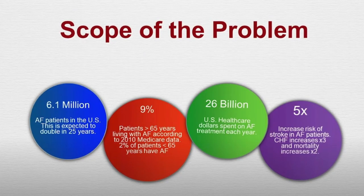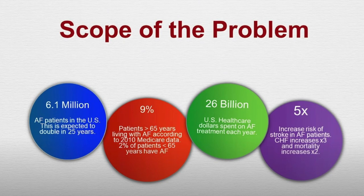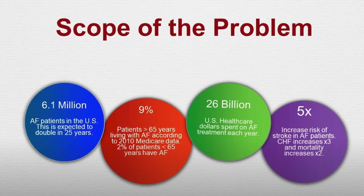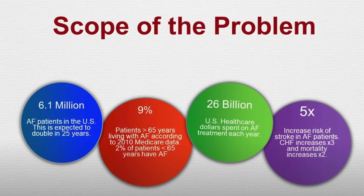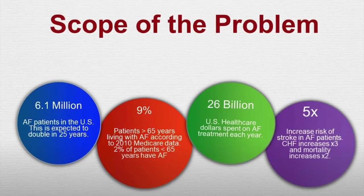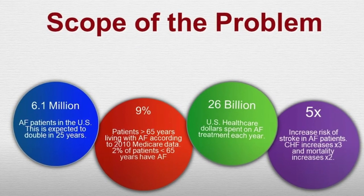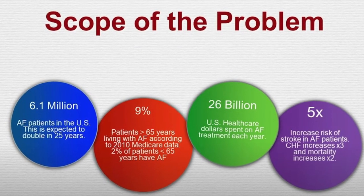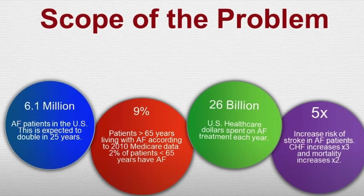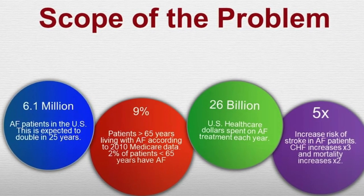How common is atrial fibrillation? It is the most common arrhythmia in adults and increases with age. It's estimated that 2.7 to 6 million people in the U.S. have atrial fibrillation, and this number is expected to double by the next decade. It affects about nine percent of people 65 and older, and costs about 26 billion dollars a year.